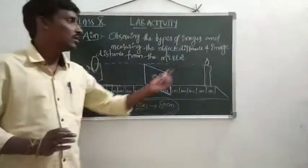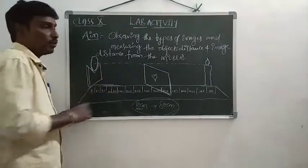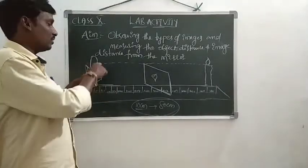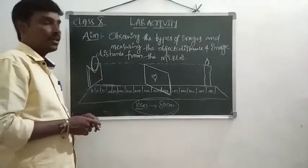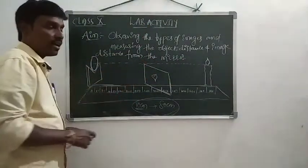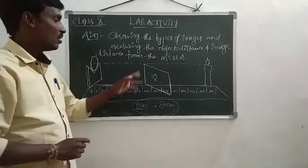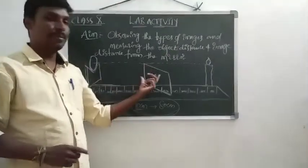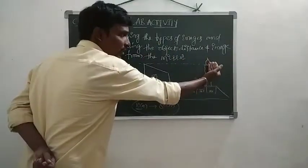Take a precaution: the flame of the candle should be above the axis of the mirror. The axis is the line drawn directly from the center of the mirror, shown as a dotted line. The screen — the paper — should be placed below the axis.